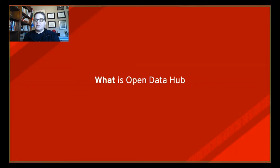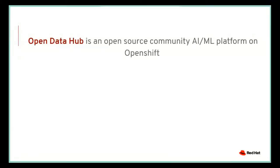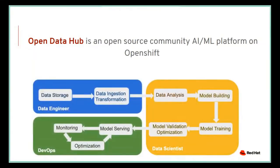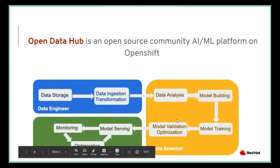Let's take a look at what Open Data Hub specifically is. Open Data Hub is an open source project driven by an open source community. It's a collection of tools and components that make up the end-to-end AI ML platform specifically on OpenShift. The AI ML workflow starts with prepping and transferring data into a data lake or storage and making it accessible for data scientists, followed by model development — data analysis, feature selection, model creation, training, and validation.